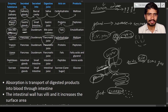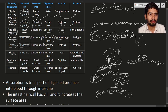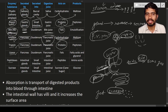Trypsin is also released by the pancreas. The pancreas produces three types of enzymes: amylase, trypsin, and lipase. Trypsin acts on proteins, similar to pepsin. When trypsin acts on proteins, the proteins are broken down into smaller fragments called peptones.